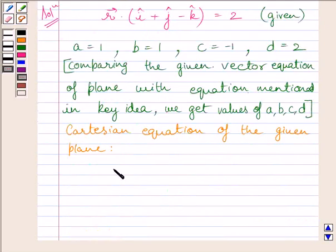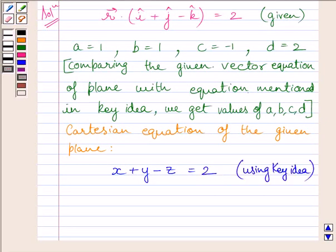Now, we get Cartesian equation of the plane is X plus Y minus Z is equal to 2. So, this is the required Cartesian equation of the plane.